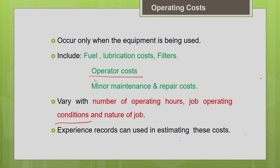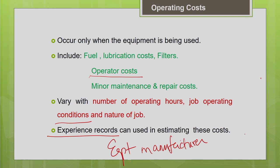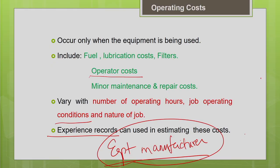How do we estimate operating cost? You can get this information from past experience records if you have properly accounted and consolidated information about similar equipment in similar site conditions. Otherwise, you go for the manufacturer's recommendations. Most equipment manufacturers supply an equipment handbook, which for every model provides information on fuel cost estimation, lubricating oil estimation for different operating conditions, repair cost, and tire life. Different handbooks are available from which this information can be obtained.